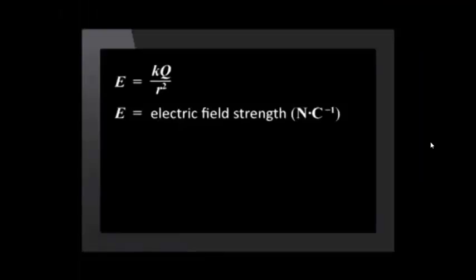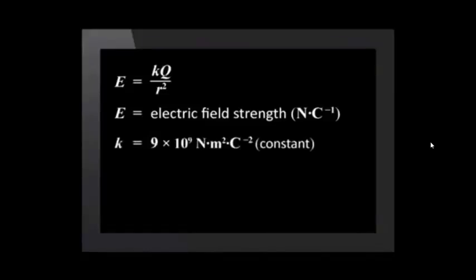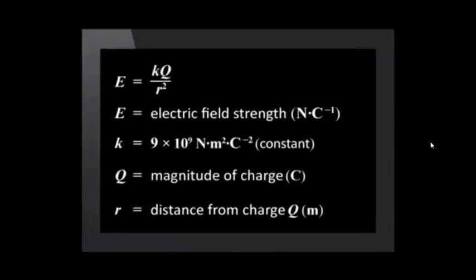There is another equation that can be used to calculate electric field strength if the distance from the charge is known. The equation states that E equals K Q over R squared. K is the same constant as that found in Coulomb's law equation, which is 9 times 10 to the 9. Q is the magnitude of the charge and R is the distance from the charge.